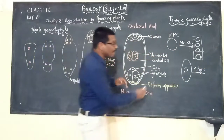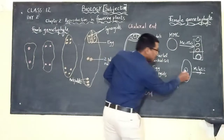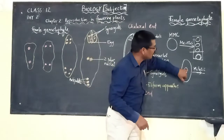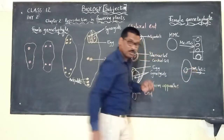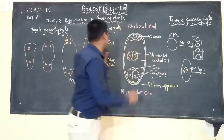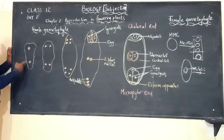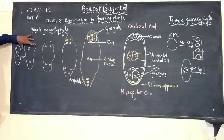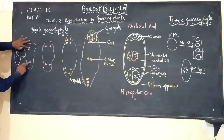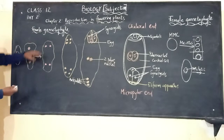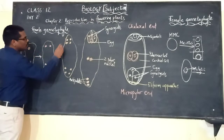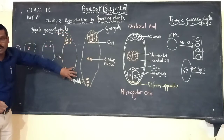The nucleus inside this megaspore will be undergoing mitosis. When the nucleus undergoes the first mitotic division, it forms two nuclei. These two nuclei then undergo another mitotic division forming four nuclei. Again, these four nuclei undergo another mitotic division, forming four nuclei at one pole and four at the other pole.